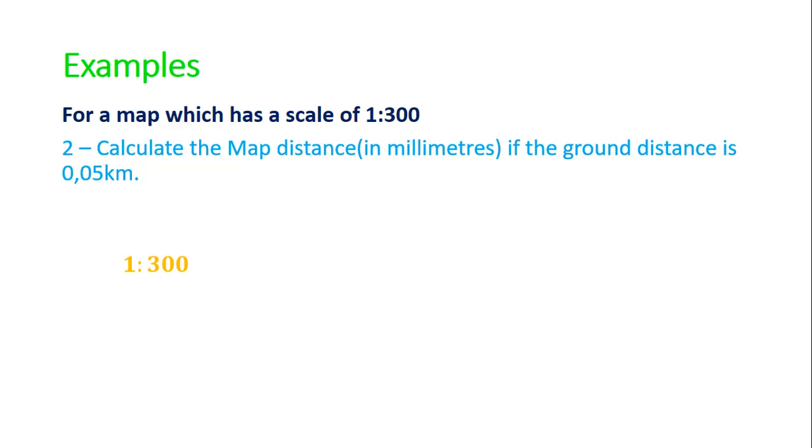We write down our scale. The number on the left is the map and the number on the right is the ground distance or actual distance. In this question they've given us the actual distance and they want the map distance, so if we're going from actual to map we divide by our scale. Therefore if we have 0.05 kilometers, we divide by 300, and that gives us 0.00016666 etc.